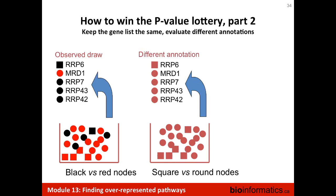Another way of winning the p-value lottery: even if you don't have the same bowl of balls, but different bowls, you try various hypotheses and try to find the right answer. Ultimately you will find an answer that looks good if you don't correct for multiple testing. In this case you are sampling from black and red balls, but also from square and round figures — if you test all these different potential outcomes, you will find one that looks legitimate, but you need to apply multiple testing correction.